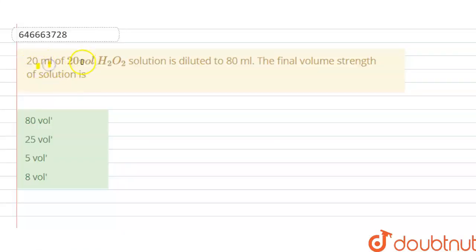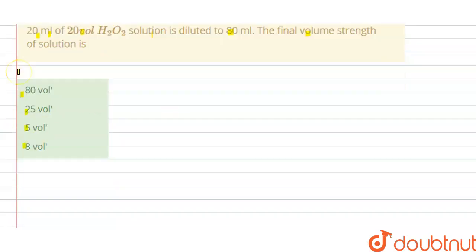20 ml of 20 volume H₂O₂ solution is diluted to 80 ml. The final volume strength of the solution is: options A, B, C, D are given here. So we have to choose the correct option. The solution of